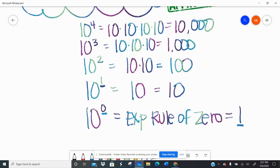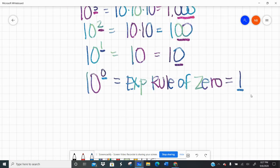10 to the 1st power, I have a 1 and 1 0. 10 to the 2nd power, I have a 1 and 2 0s. 10 to the 3rd power, I have a 1 and 3 0s. So 10 to the 4th power, I have a 1 and 4 0s.